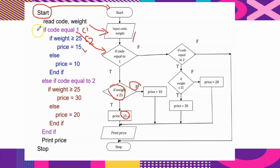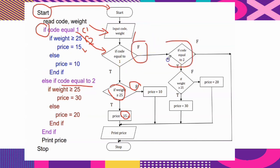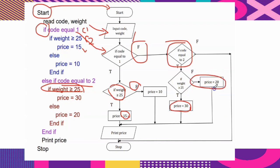If the first condition is false, the computer checks the ELSE IF — code equal to 2. Then the computer checks the inner condition: if weight is greater than 25, the price will be 30 ringgit; if false, price equals 20 ringgit. Make sure all arrows are connected properly — price 30 ringgit and price 20 ringgit paths must both connect forward correctly.